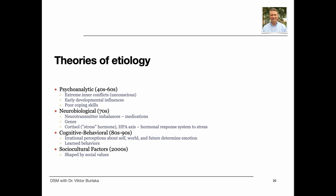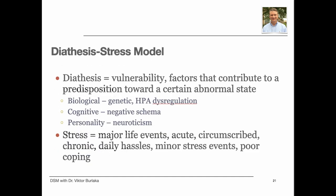There have been different explanations of what causes mental illness in different periods of history. The diathesis-stress model is a psychological theory that attempts to explain a disorder, or its trajectory, as the result of an interaction between a predispositional vulnerability — also known as diathesis — and a stress caused by life experiences. The Greek word diathesis stands for a predisposition or sensibility. A diathesis can take the form of genetic, psychological, biological, or situational factors.